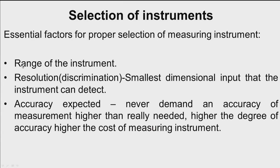Some essential factors for proper selection of a measuring instrument are listed. The range of the instrument indicates what is the minimum and maximum value we can measure. For a dial indicator, if the range of movement of the plunger is 10 millimeters, then the range is 0 to 10 millimeters.